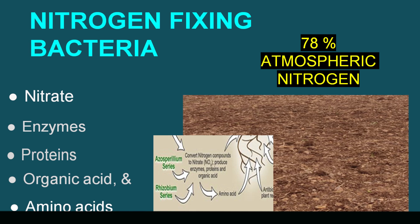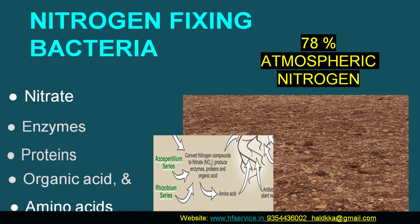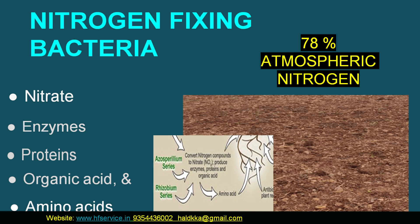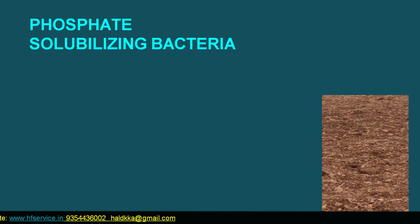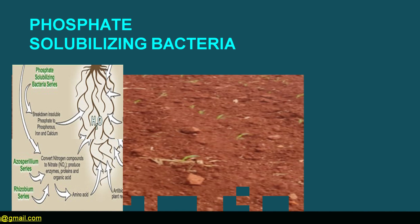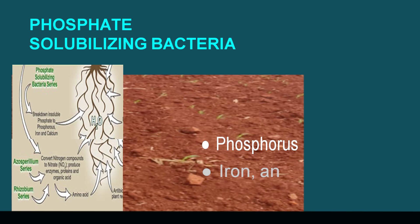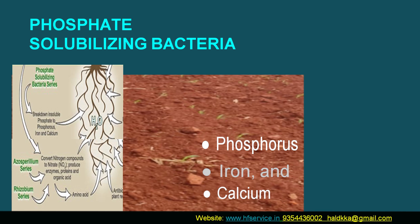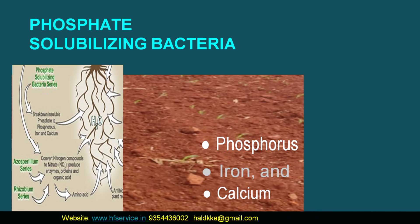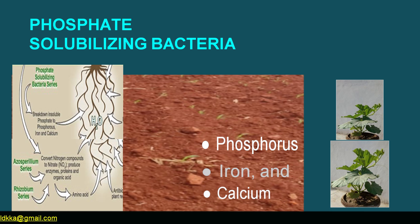These are then used by the plants either directly or as an ingredient in making food. Another group of microbes — phosphate solubilizing bacteria — solubilize phosphate, iron, and calcium so that they are easily absorbed by the plant roots and used in nourishment, that is, food making.